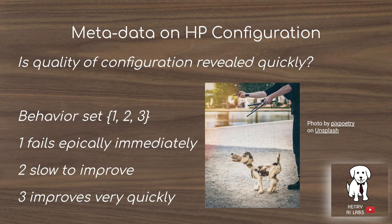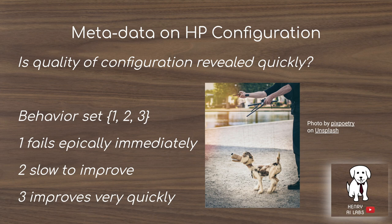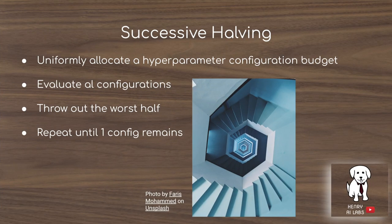You need to think about the metadata on the behavior of convergence. A configuration might fail immediately with dramatically terrible learning loss, or it could be slow to improve for the first 20 epochs and then improve very quickly — as was the case with V1. One way of adapting for these different convergence behaviors would be successive halving, where you uniformly allocate a hyperparameter configuration budget, evaluate the configurations, throw out the worst half, and continue that tournament-style optimization until just one configuration remains.